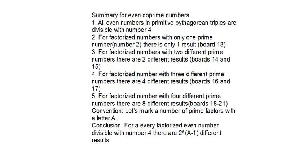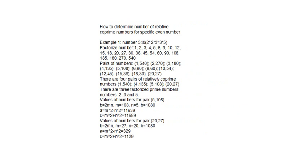For factorized numbers with three different prime numbers, there are four different results. Let's have a look. This is example number 540, which consists of three different primes. This is the number, this is the number, this is the first pair, second pair...